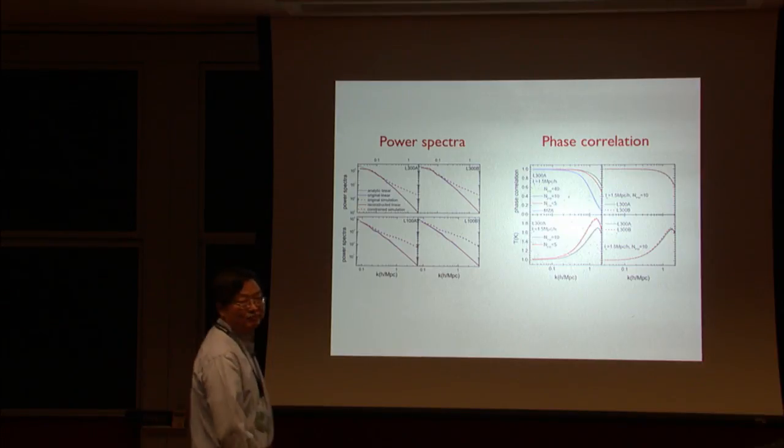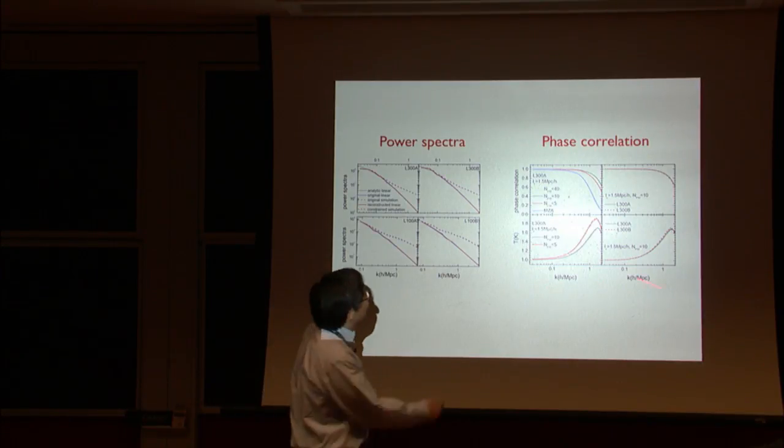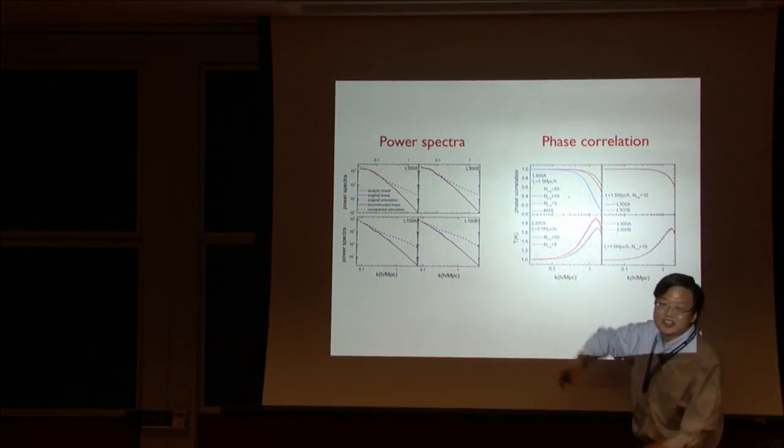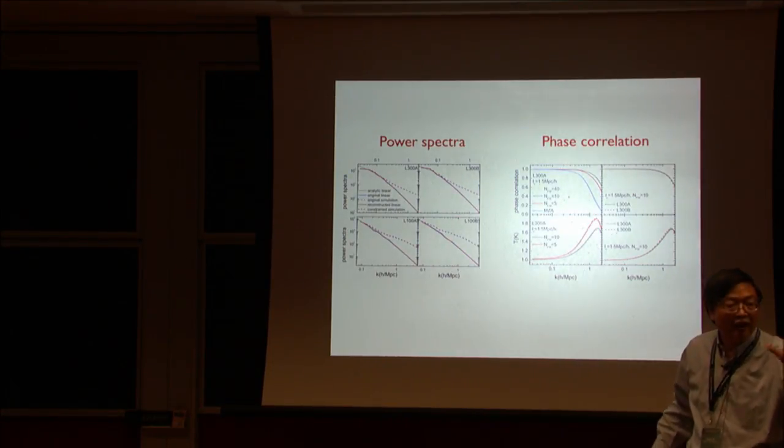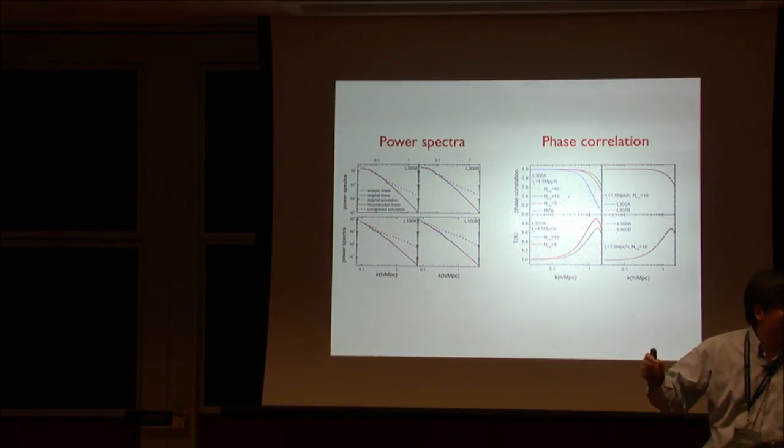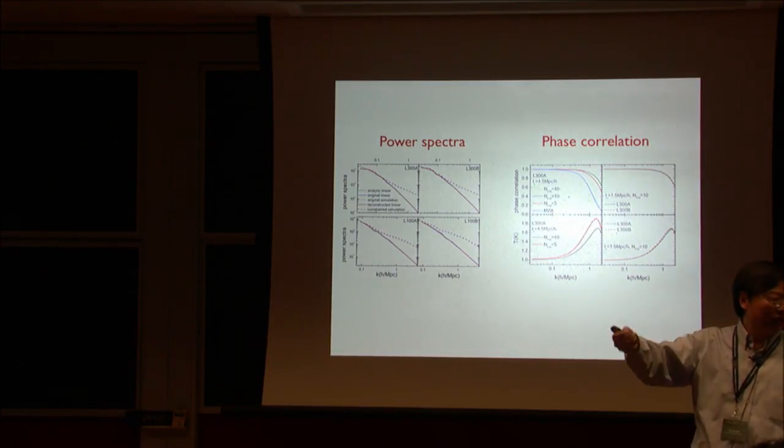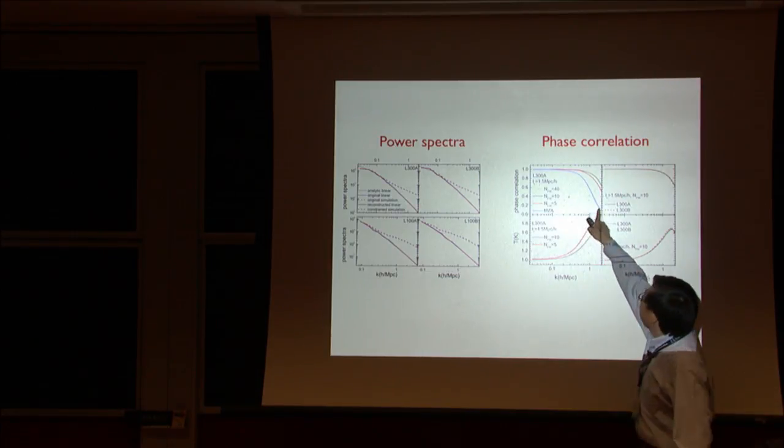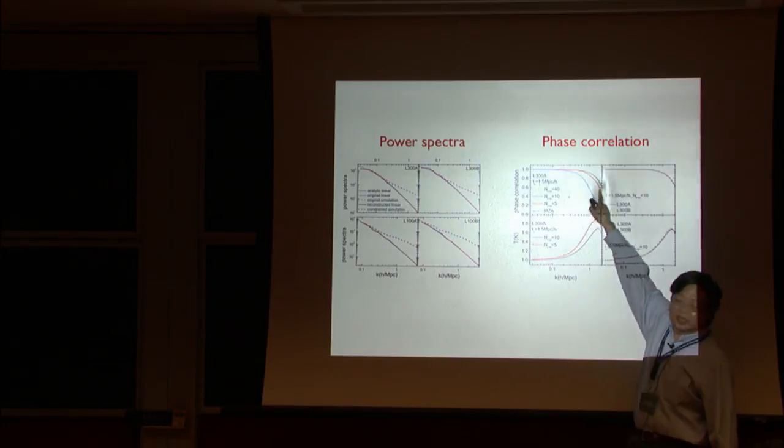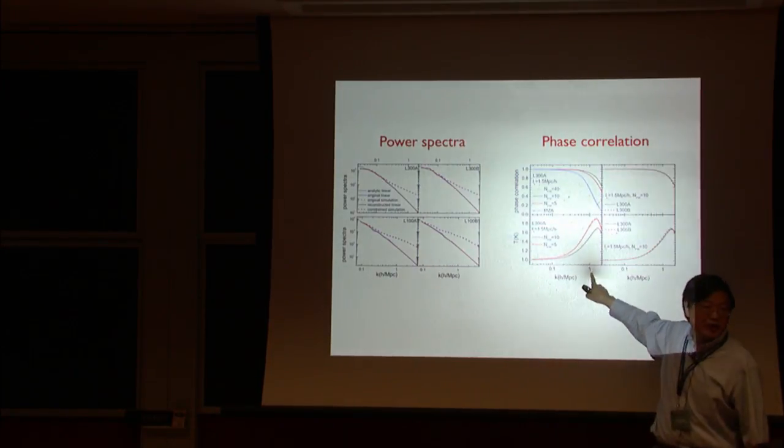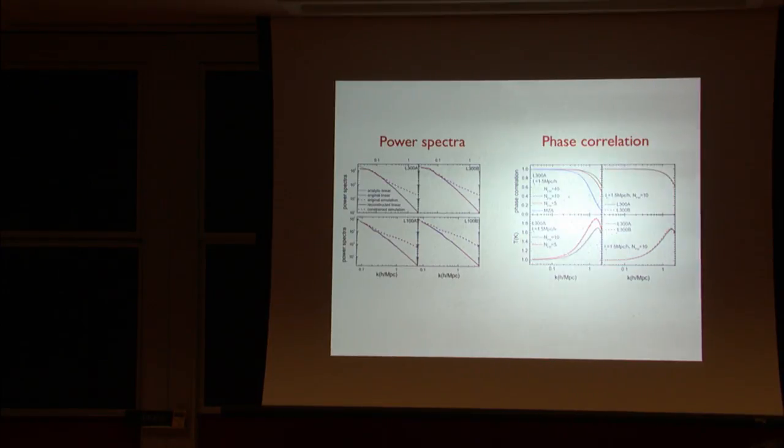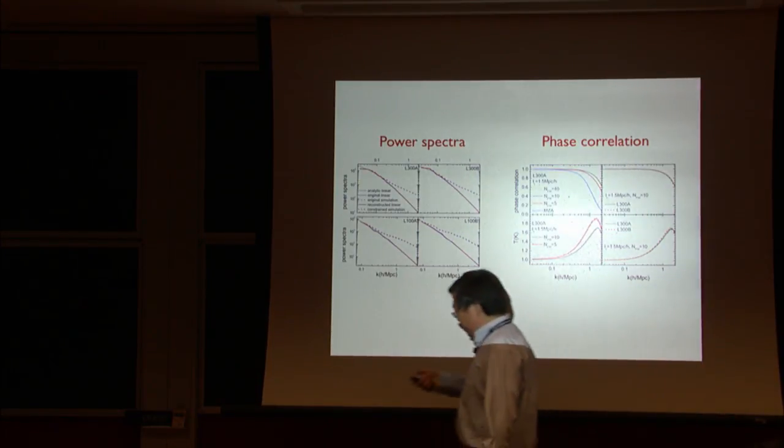As you go to high Z, the match is not bad, but then you start because they are constrained at the present day, right? You can look at the other things, power spectrum. This is the initial power spectrum. You can barely see the input one and the original one and the reconstruction one, the red and blue. And the phase correlation in K, look at it here. So this is our one.